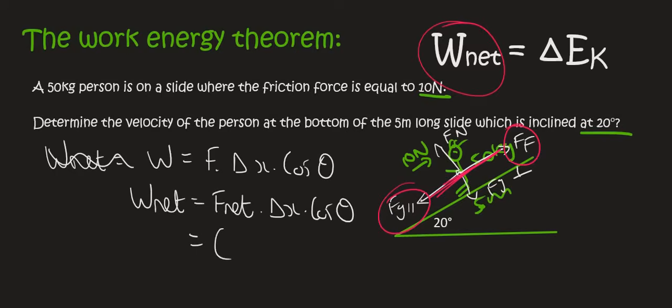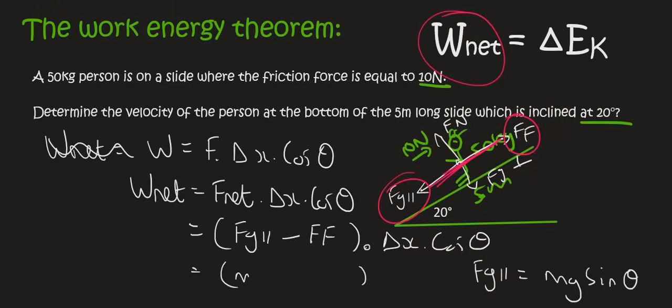So in the F net, you're going to have fg parallel, which is going down the slope, and then we're going to have minus the force of friction. Then we're going to have delta x, and then we're going to have cos theta. Now we know that fg parallel is equal to mg sin theta, and so that's going to be mg sin theta, minus the force of friction times by delta x times by cos theta.